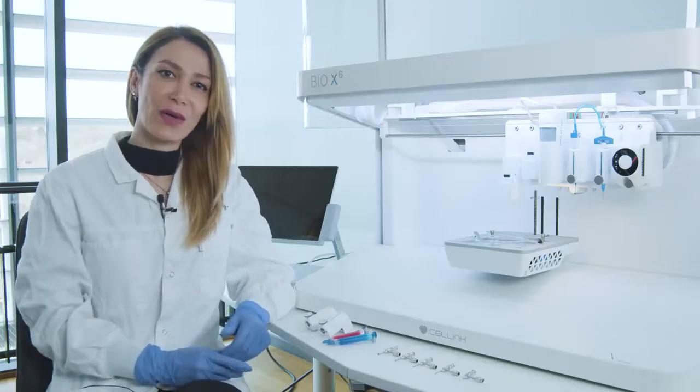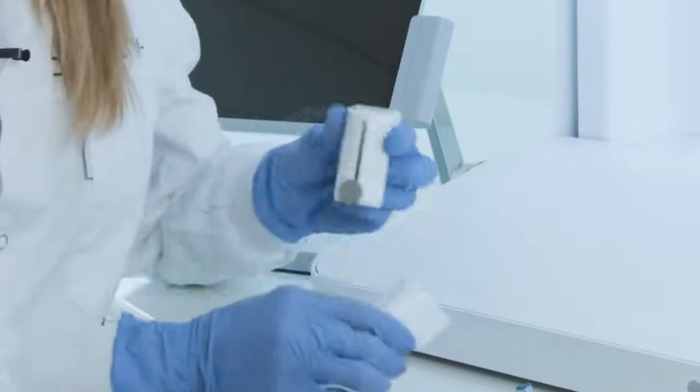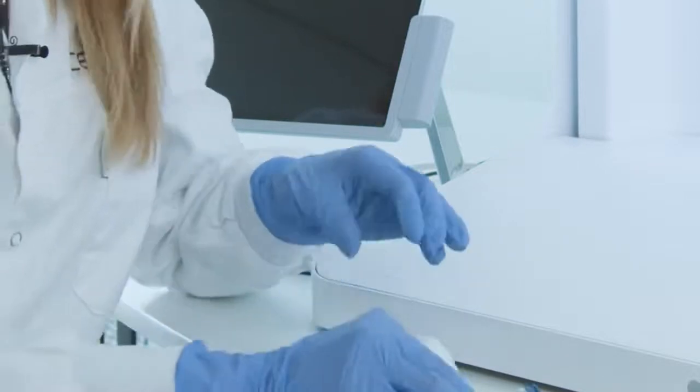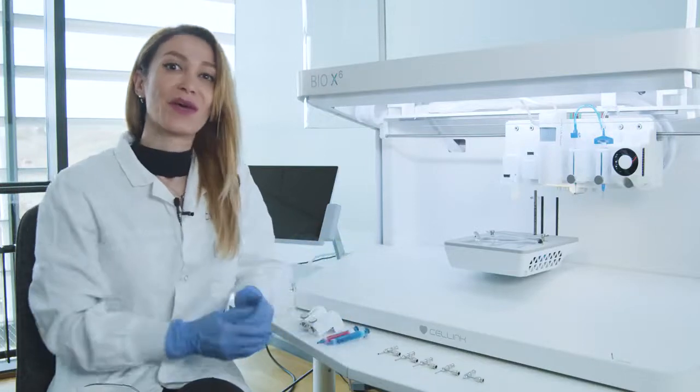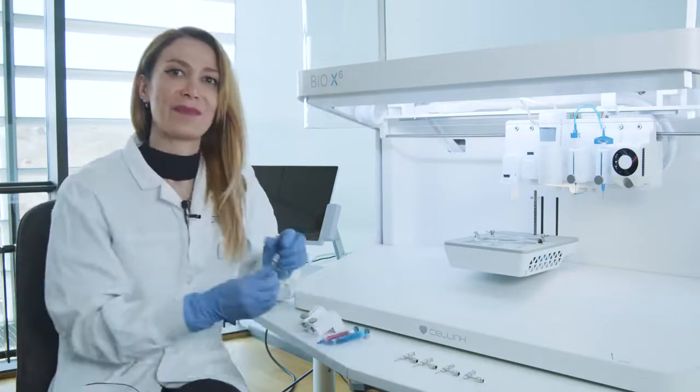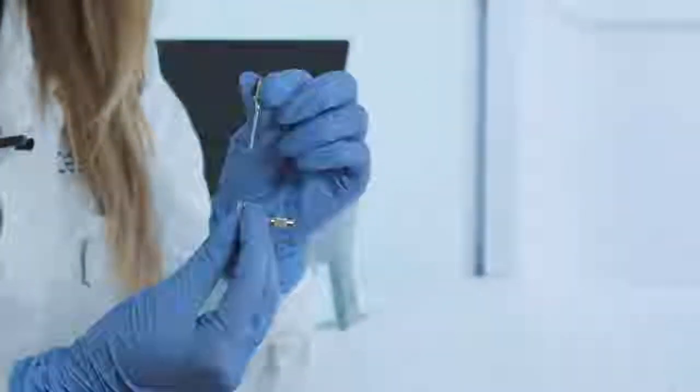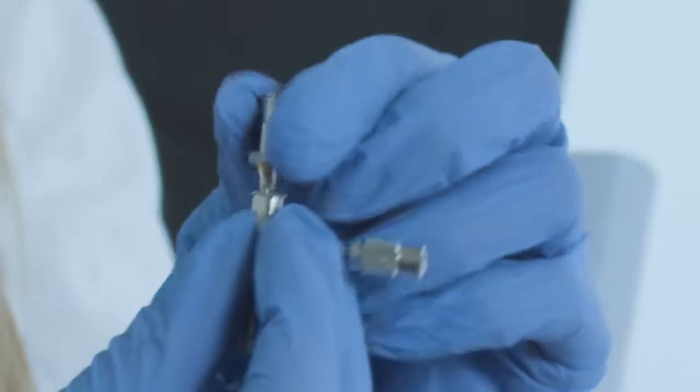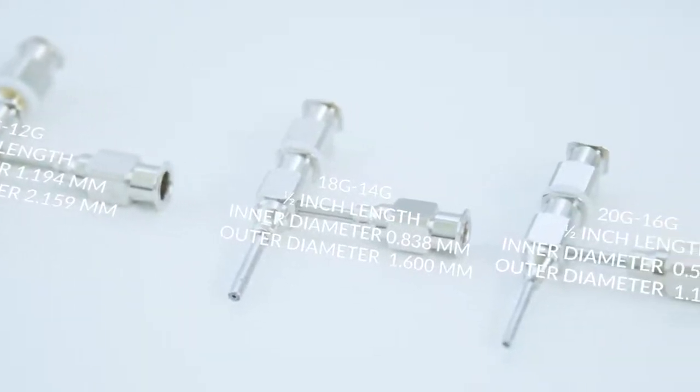The requirements for coaxial bioprinting are two pneumatic print heads, bioinks for inner and outer layers, and of course coaxial nozzles which are available in different gauge sizes and lengths. It's including a nozzle specific for the inner layer which is located into the other nozzle designed for the outer layer. And the gauge size for each is written on the nozzle.